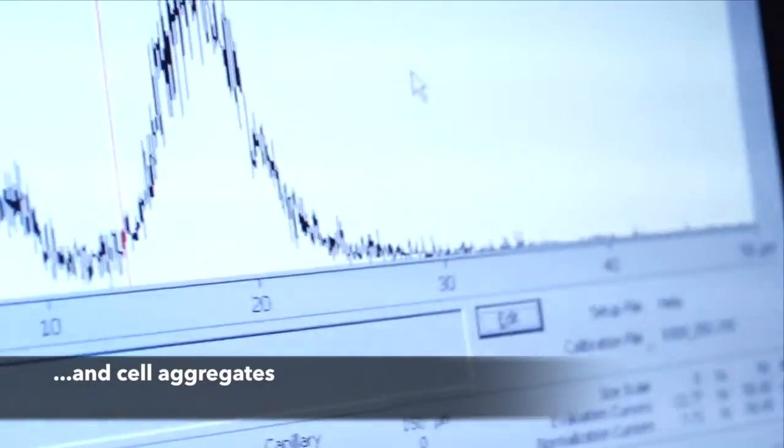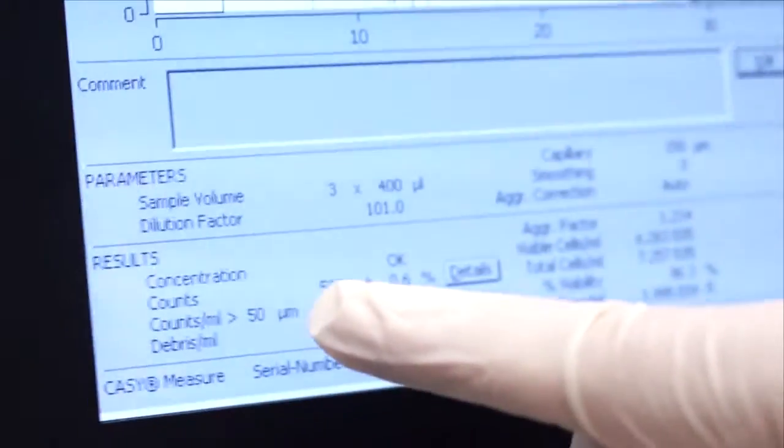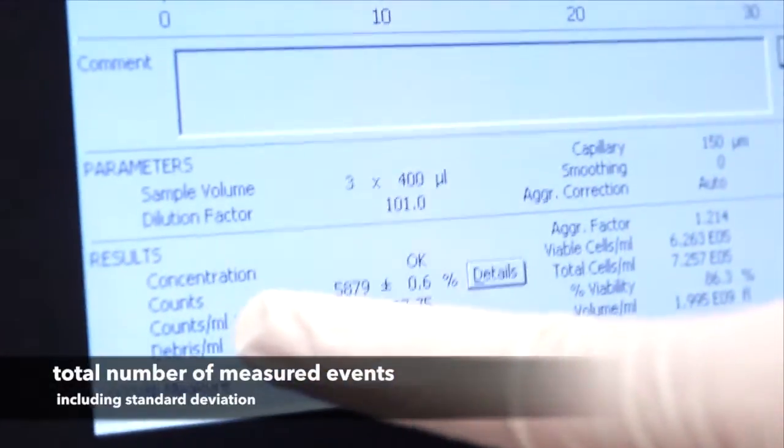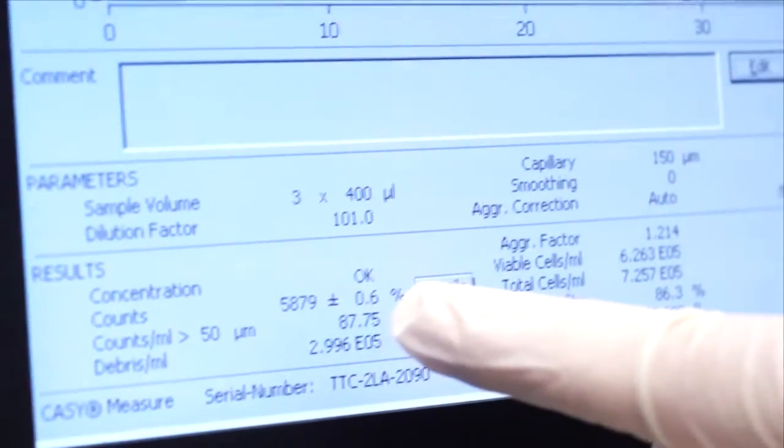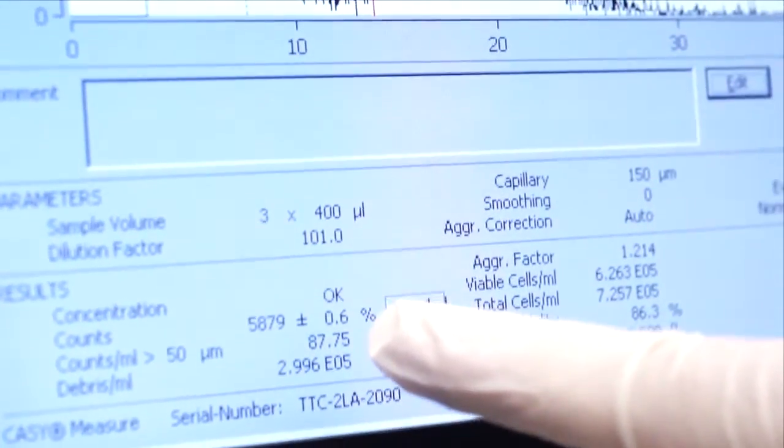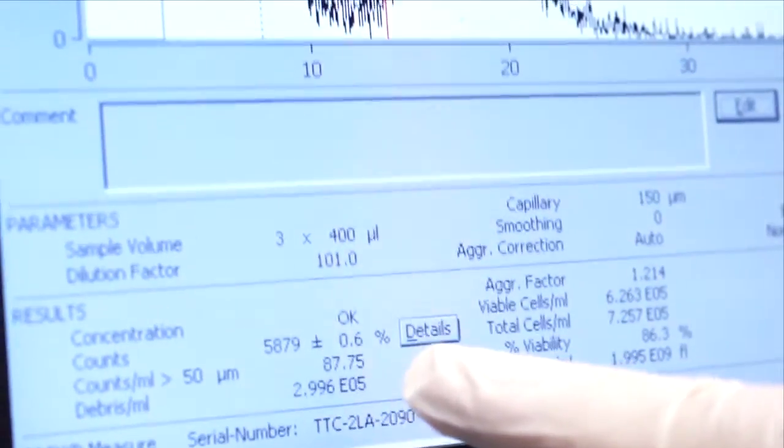As numerical results, we first get the total number of measured events. In this case, 5879, with a standard deviation which as you can see here is very good, plus minus 0.6%.